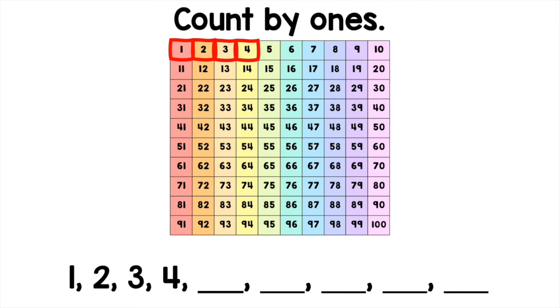To find the next 5 numbers, we simply continue counting by ones: 5, 6, 7, 8, 9.